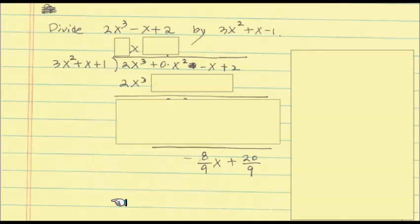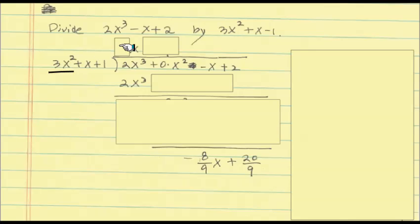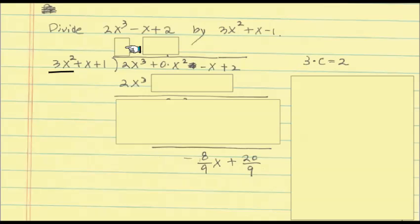Let's go over the method. First, we look at the first term, which is 2x³, and the leading term of the divisor, 3x². We always work with this leading term. We need to find what to multiply so that it matches the leading term of the dividend. For the power of x: squared times x gives x³. For the coefficient: 3 times c equals 2, so c is 2/3. That's why we multiply 2/3 here. If you multiply, 3 and 3 cancel, giving 2, which matches.